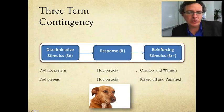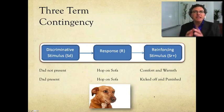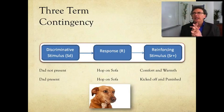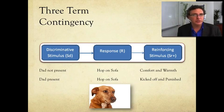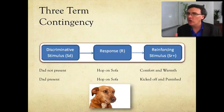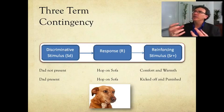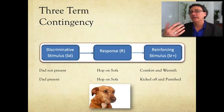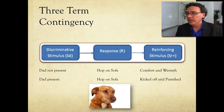Let me take you through this slowly. The basic idea is this: we find ourselves in some situation, we choose to behave a certain way, and then things happen as a result. Our mind — not consciously — figures out relationships between what we'll call a discriminative stimulus, a response, and the result, the consequence, which we're going to call the reinforcing stimulus.